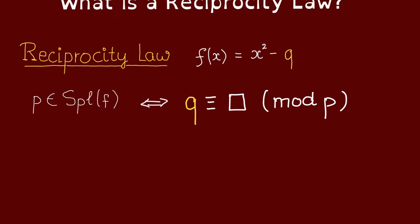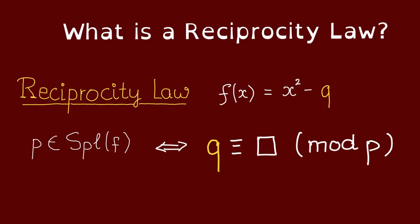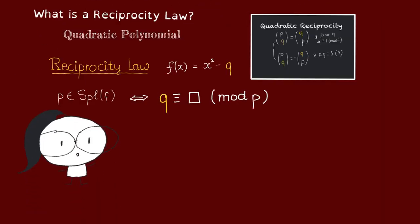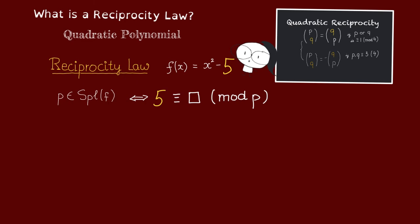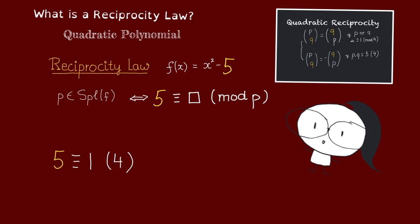Let's see how we can use this to determine the set of split f. Let's work out an example. Let's take q to be 5. Let us now try to find all the prime p such that f split over p, i.e. the prime p such that 5 is a square mod p. Now observe that 5 is congruent to 1 mod 4.